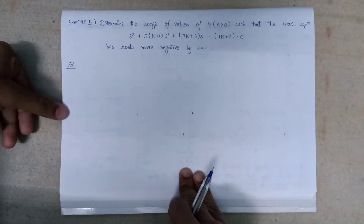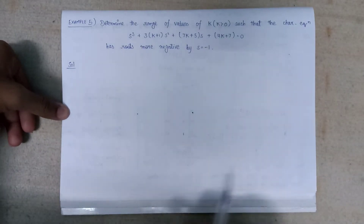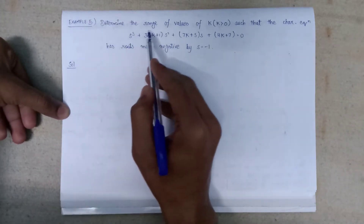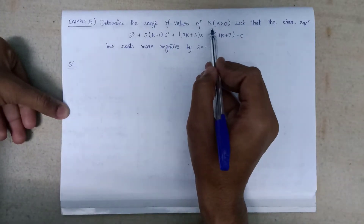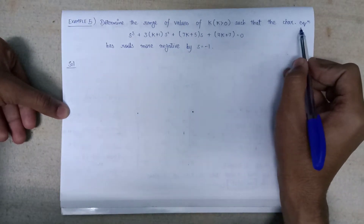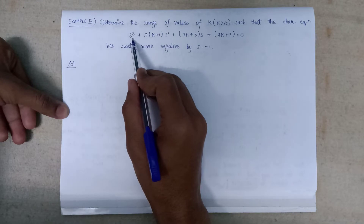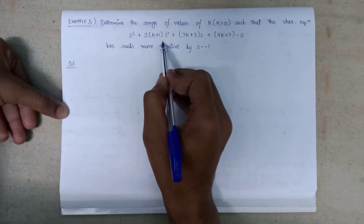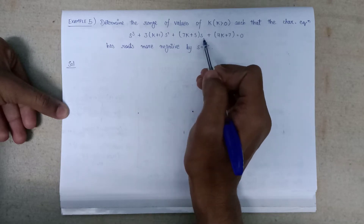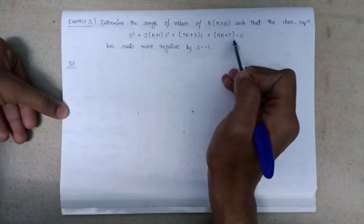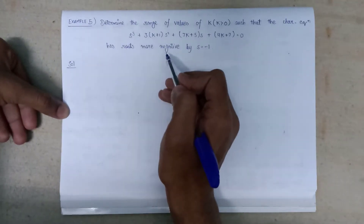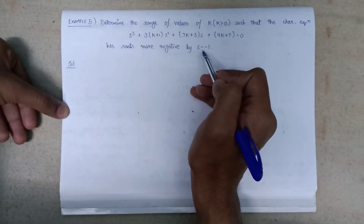Welcome all. In this lecture, we are going to solve example number 5. Determine the range of values of k, k greater than 0, such that the characteristic equation s³ + (3k+1)s² + (7k+5)s + (4k+7) = 0 has roots more negative by s equals to minus 1.